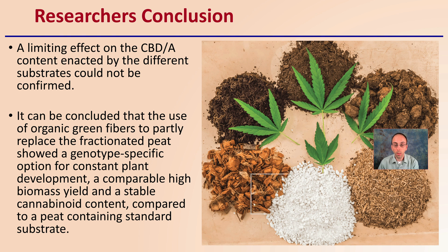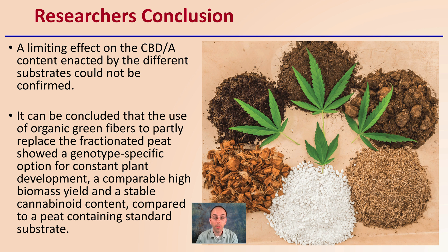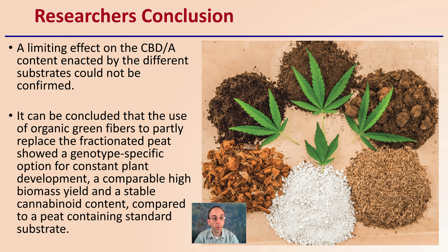So what's the research conclusion? We saw the data, we saw the pictures — what did the researchers actually have to say? They said that a limiting effect on the CBD and CBa content enacted by the different substrates could not be confirmed, meaning one substrate didn't necessarily produce any higher CBD or CBa in the plants studied. It can be concluded that the use of organic green fibers to partially replace fractionated peat showed a genotype-specific option for consistent plant development.